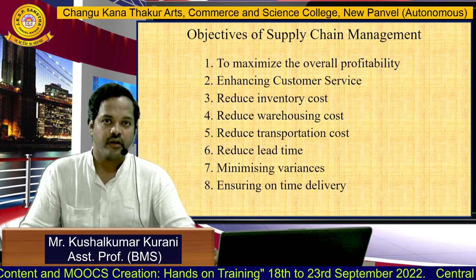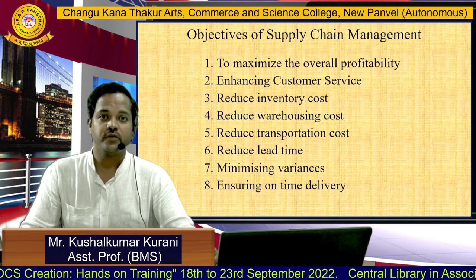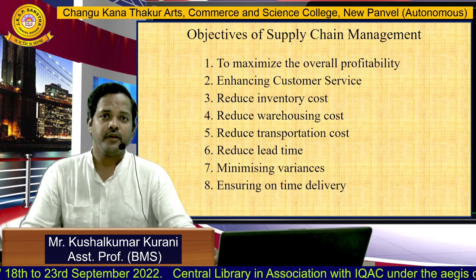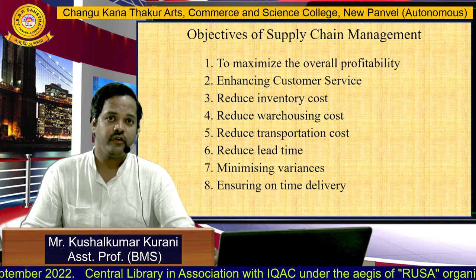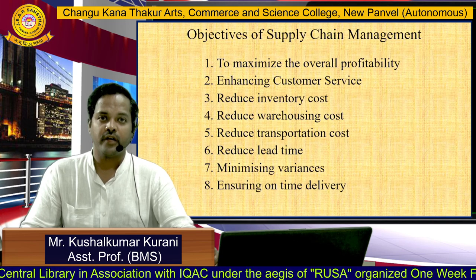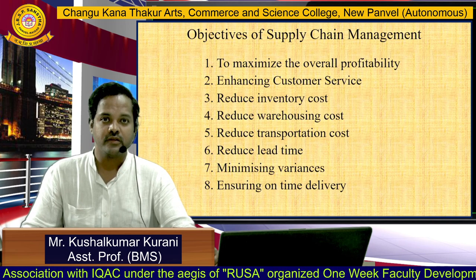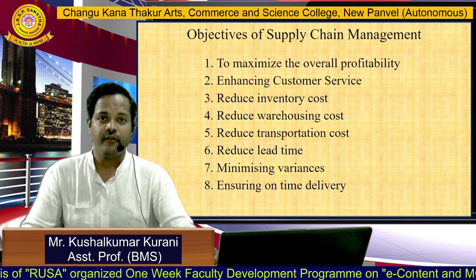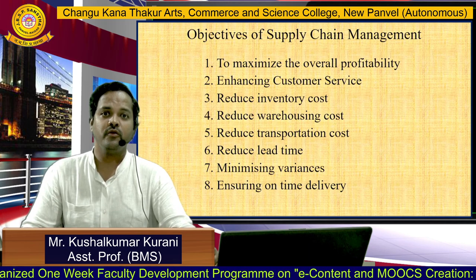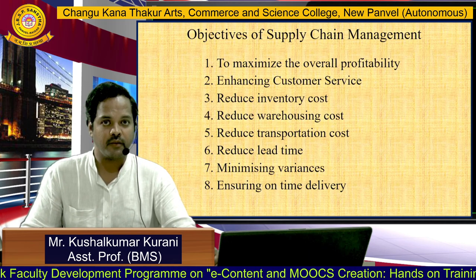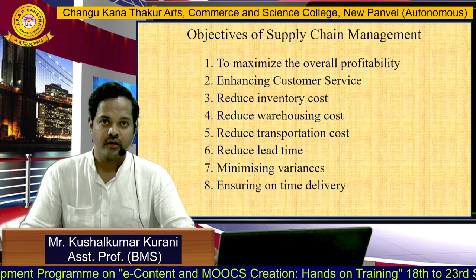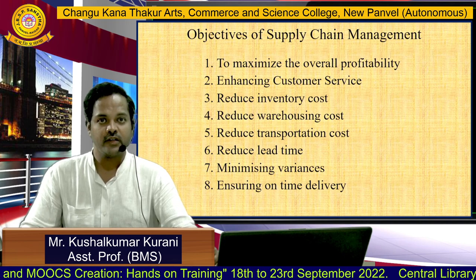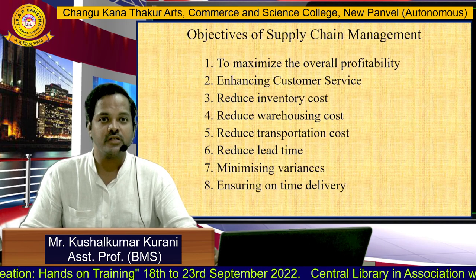The next three objectives are about cost: reduce inventory cost, reduce warehousing cost, and reduce transportation cost. Inventory cost includes ordering cost and carrying cost. If we order raw materials in bulk to get a discount, we need to store them in a warehouse, increasing warehousing cost. When warehousing cost goes up, transportation cost to move materials to the factory also rises. So each cost has an impact on the others. We have to balance inventory cost using economic order quantity — ordering only what is required by the company.